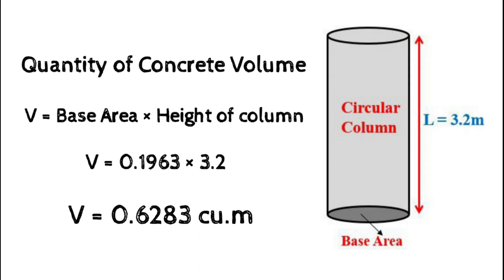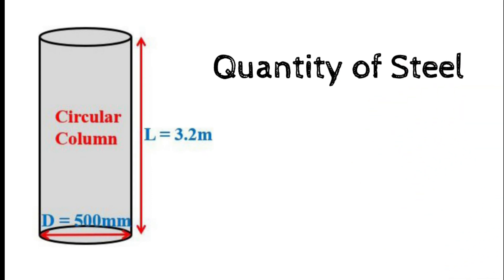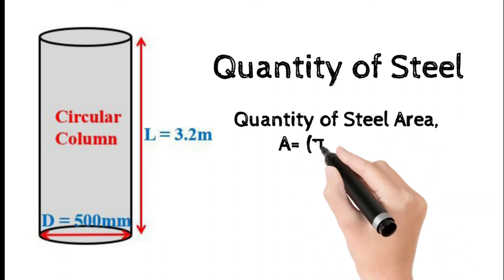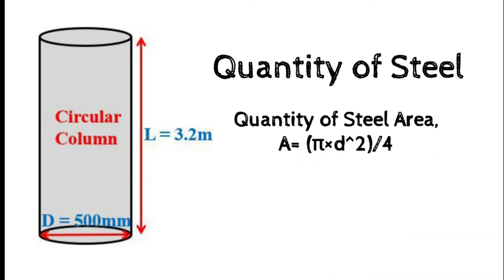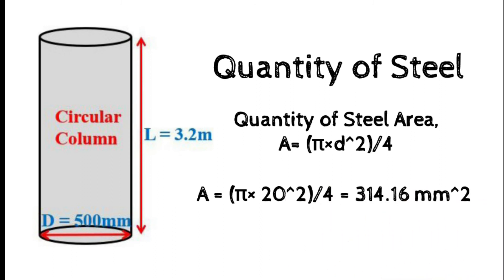Next, how to calculate the quantity of steel in case of a circular column. The quantity of steel area equals πd²/4, because the steel reinforcement is in the form of a circular bar, so the area of circle formula πd²/4 is used. Here, d is the diameter of the bar. Substituting 20 mm as the diameter, we get 314.16 mm² as the area for a single 20 mm diameter bar.